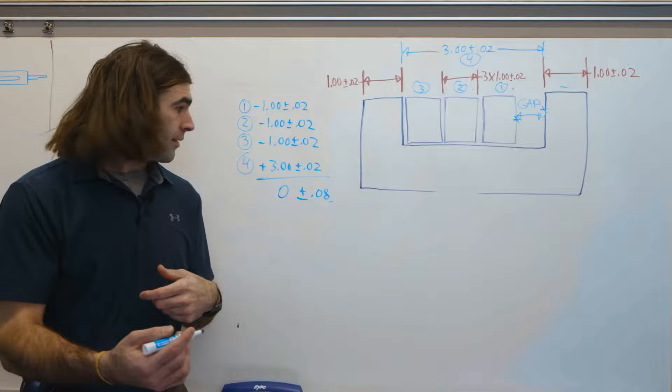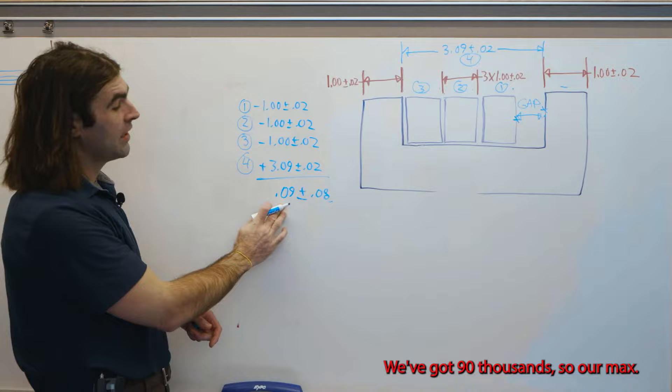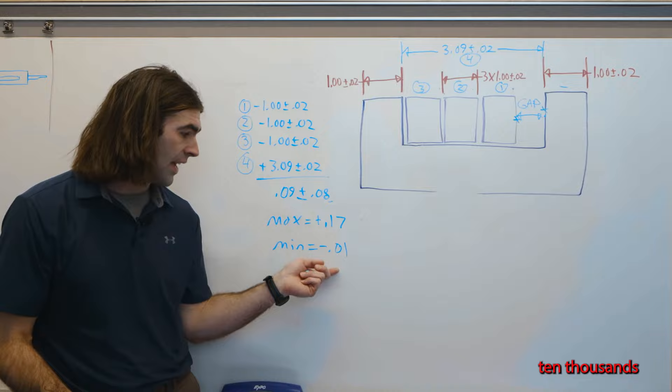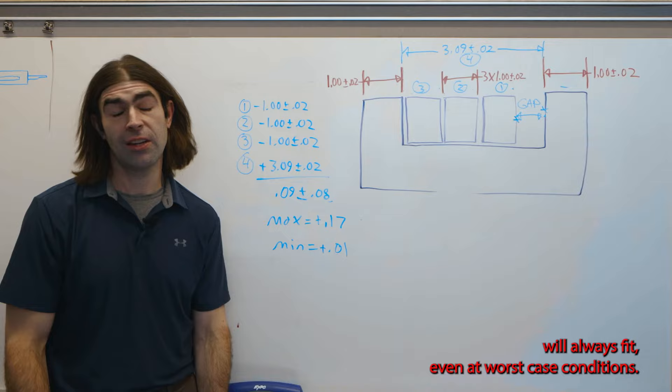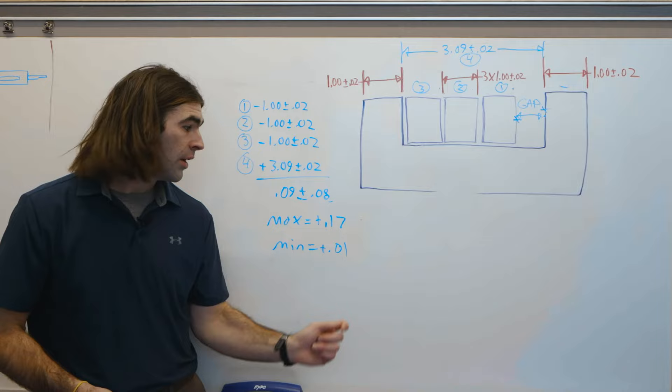So what I'm going to do is make the groove larger by 90 thousandths. So what that's going to do for us, we go through and add these all up. So we've got 90 thousandths. So our max is 170 thousandths, our minimum is 10 thousandths. So that means that all three blocks will always fit even at worst case conditions. So if the blocks come in all big and the groove comes in small, you'll always have 10 thousandths of clearance in this assembly.